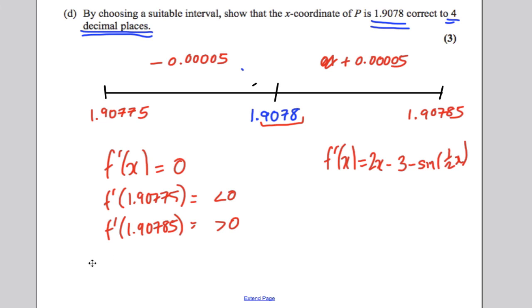You write those numbers down, whatever they turn out to be. Therefore, change of sign, f dashed x continuous. Therefore, 1.90785 is correct root to 4 decimal places. And you're done. And that's that.